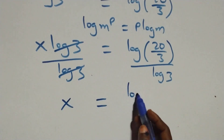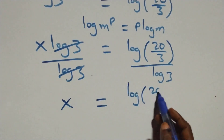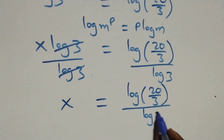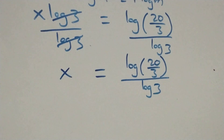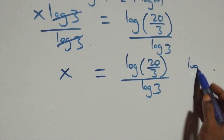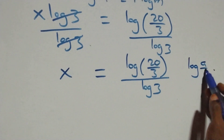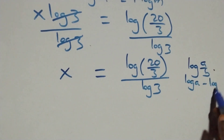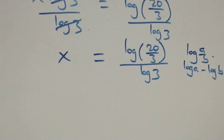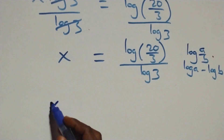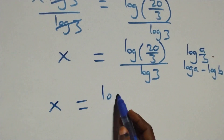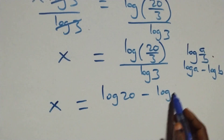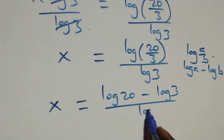Log 3 cancels each other and we have x equals to log 20 over 3, divided by log 3. This follows the law of logarithm: when we have log a over b, this is the same thing as log a minus log b.